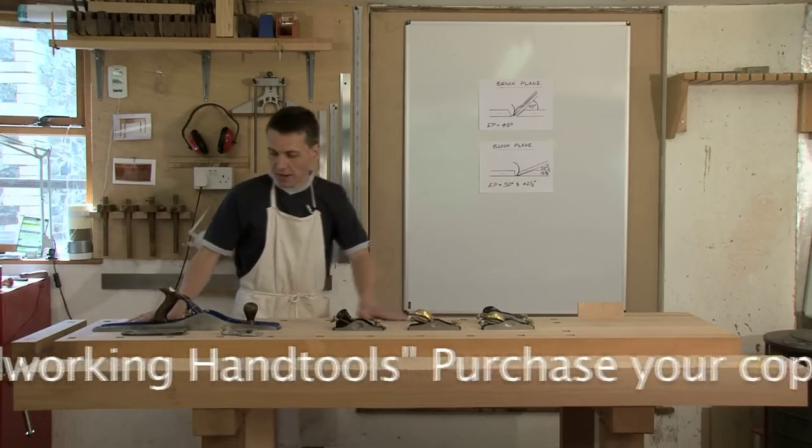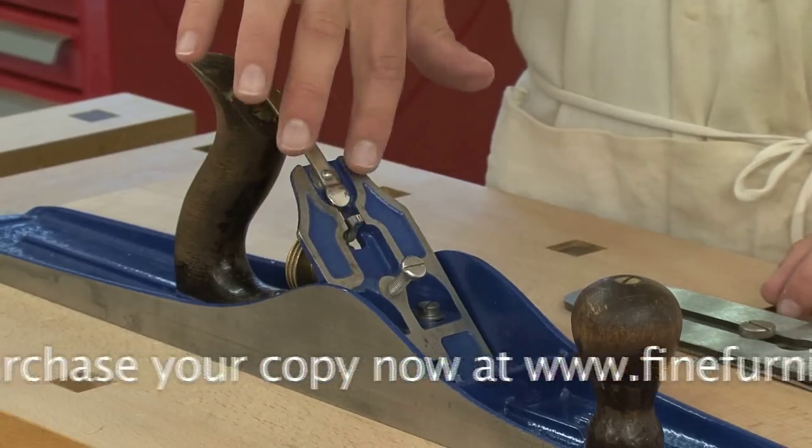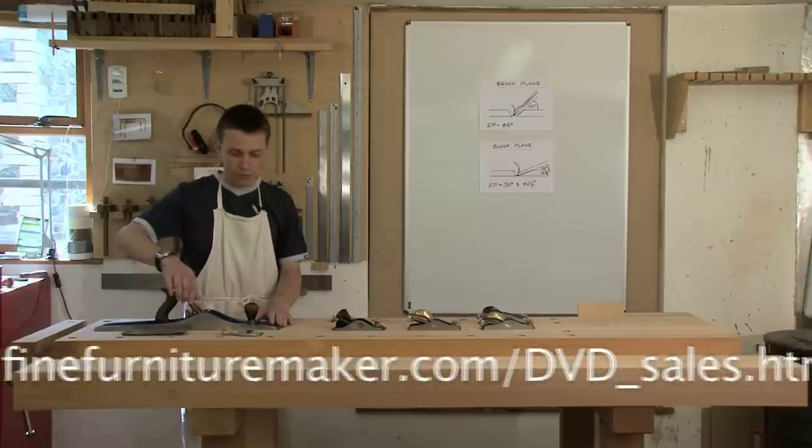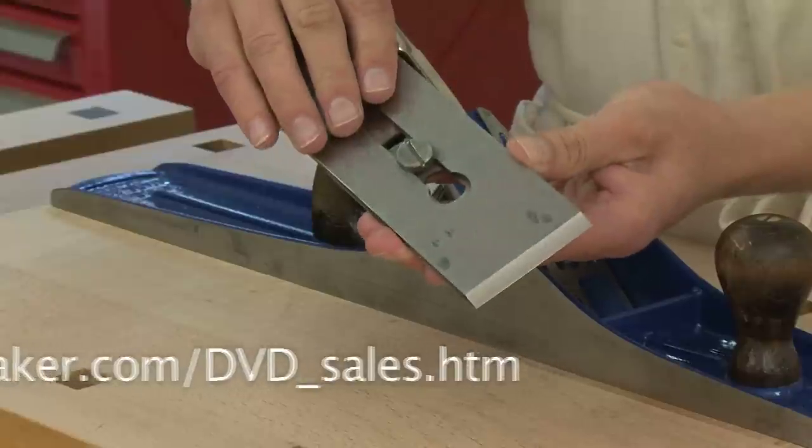If you look at a regular bench plane, in the body of the plane we've got a frog which is adjustable forward and back, and onto that sits our blade.